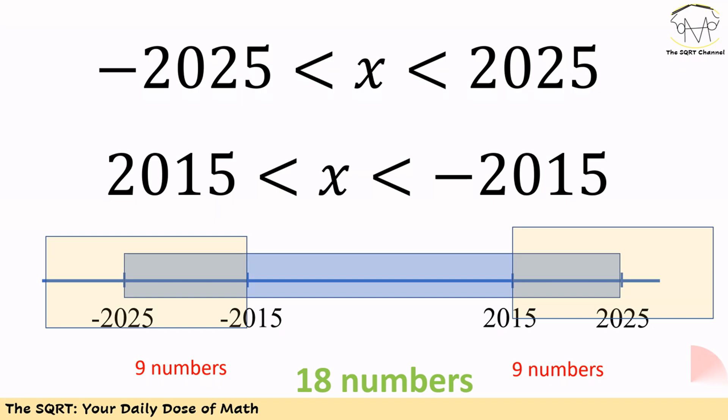As you can see, we need to find the ranges that are overlapping. The first one is between -2025 and -2015, and the second one is between 2015 and 2025. In each range we have nine integer values, so in total we have 18 solutions.